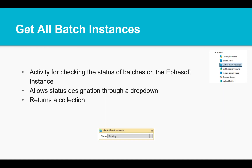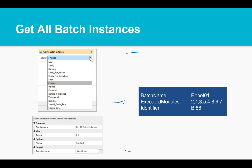The Get All Batch Instances activity provides robots the ability to track the progress of batches within EFASOFT and can be used to trigger robot or human action. As shown here, you can specify the status of the batches you're looking to monitor, return those into a collection, and then proceed as required.